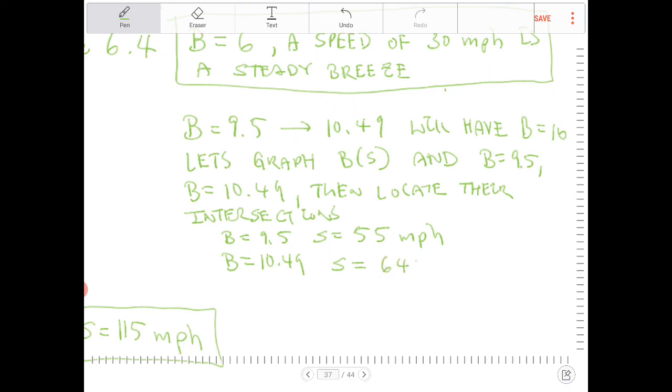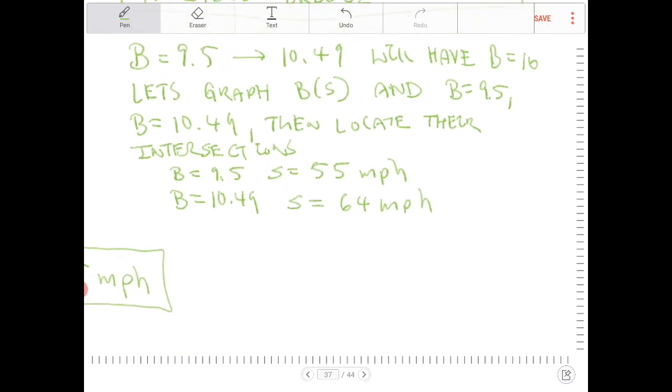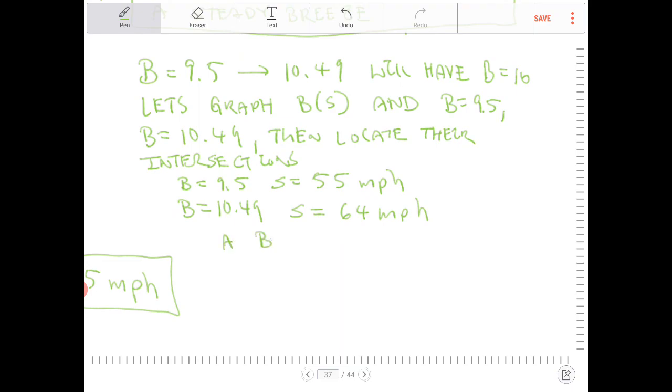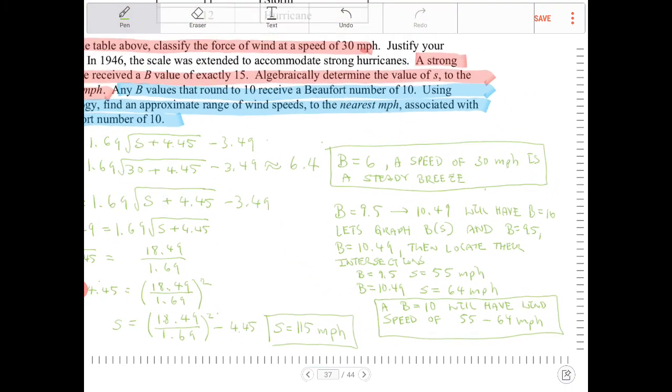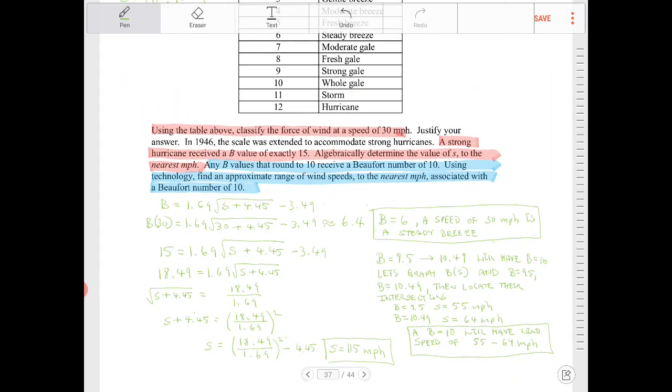So for a Beaufort number of 10.49, it's going to be roughly 64 miles per hour. So a B equal to 10 will have wind speeds of 55 to 64 miles per hour. And here is everything in its entirety again.